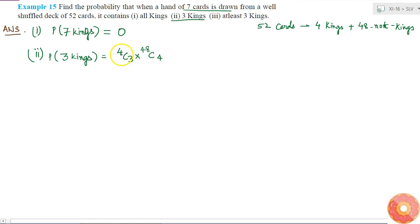These are the total different combinations possible of 7 cards having 3 kings divided by 52C7. These are all the possible combinations of 7 cards that I can pick from the deck of 52 cards. So what will this be equal to? I know 4C3 is equal to 4C1 which is 4.